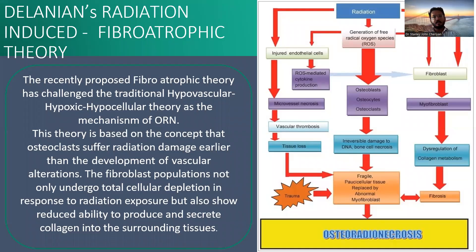Delaney's theory is the most accepted and most recently given theory. He put forward the fibro-atrophic theory. He said that fibroblasts and osteoblasts undergo radiation damage before the endothelial cell. This results in dysregulation of collagen metabolism and damage to the DNA of bone cells, ultimately resulting in bone necrosis.